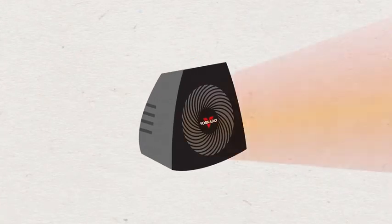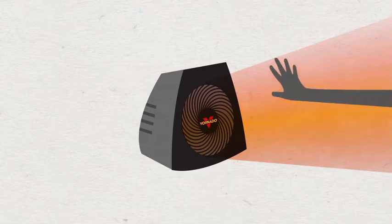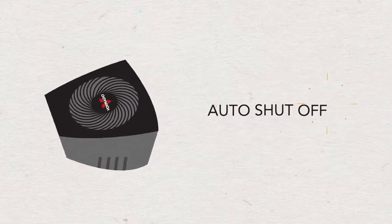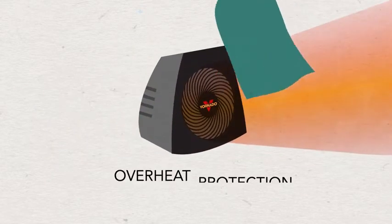For added safety, a Vornado comes prepared for everyday unexpected incidents. It automatically shuts off if tipped over or if something blocks the airflow.